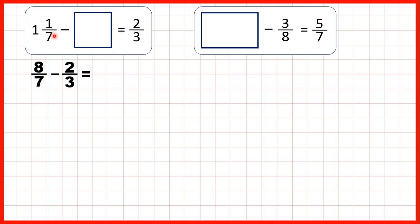Now 1 and 1/7 is the same as 8/7, because 1 times 7 is 7, plus 1 is 8, and the denominator stays the same when we change it to an improper fraction. But our denominators need to be the same before we can subtract. 7 isn't a multiple of 3, but the lowest common multiple of 3 and 7 is 21.